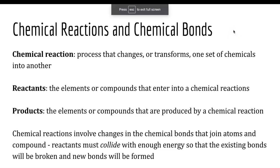This lecture is about chemical reactions and chemical bonds. A chemical reaction is a process that changes or transforms one set of chemicals into another, and a chemical is anything made up of multiple atoms. There are two parts of a chemical reaction: the reactants, which are your starting materials, and the products, which are what you end up with — the end result of the chemical reaction.